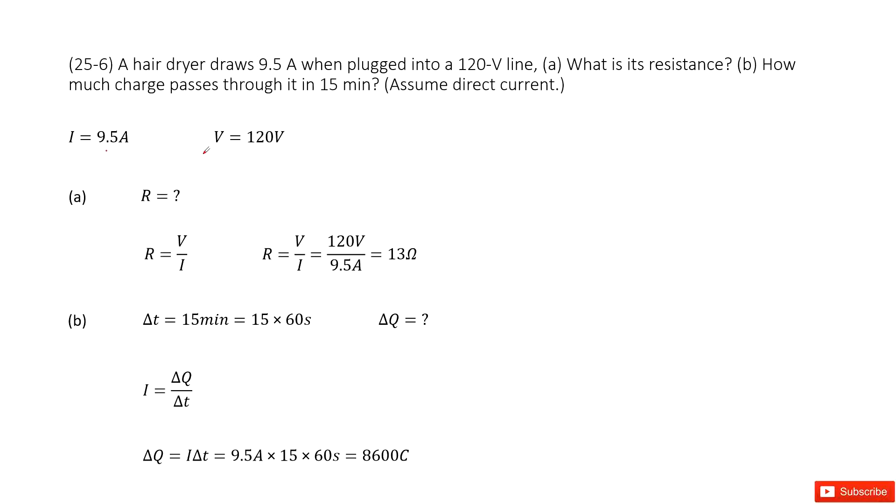The first question asks what is the resistance. Very straightforward - we can consider Ohm's law. Ohm's law tells us the resistance equals voltage divided by current: R = V/I. So we input the voltage and current, R = 120V/9.5A = 12Ω.